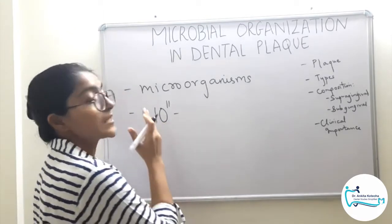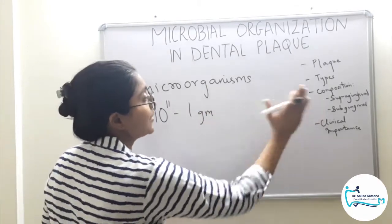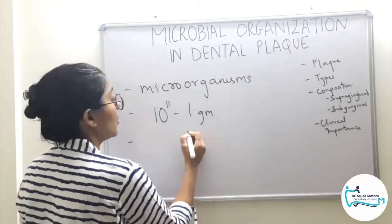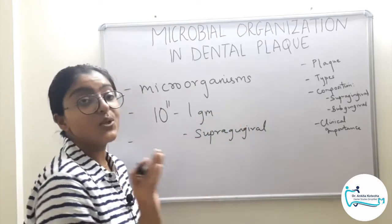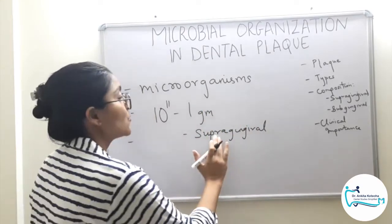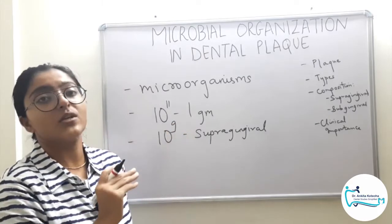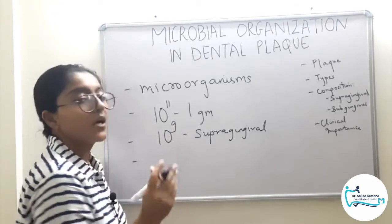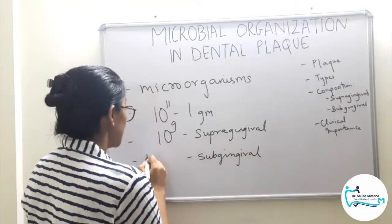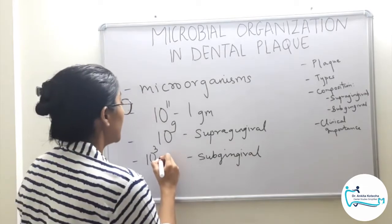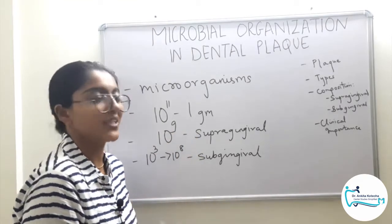That is the number of bacteria present in one gram of wet weight dental plaque. There are mainly two types of plaque: supragingival and subgingival. Supragingival plaque present on a single tooth surface may contain microorganisms of almost 10 raised to 9 or more. For subgingival plaque present in pockets or a sulcus, the range is 10 raised to 3 bacteria in a healthy sulcus, and may range up to more than 10 raised to 8 bacteria in a pathologically deepened sulcus called a pocket.